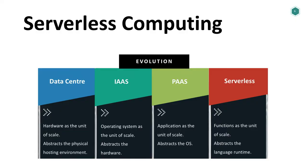Let's talk about evolution. A long time ago, we had data centers. Data center hardware meant that if you needed more storage you added a hard disk, you needed more computing power you added a CPU, and if you had room for more servers you added another room for the servers.